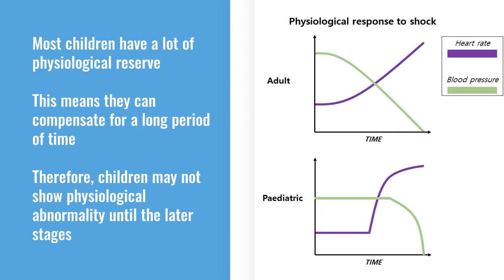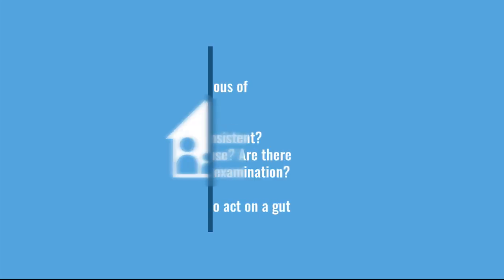Children compensate really well for a long time and then suddenly deteriorate — you don't get the slow deterioration you see with elderly patients. Some of the early features might not present as obviously early as you'd expect. For example, if they're tachycardic, that's probably a sign of shock. Whereas adults might drop their blood pressure, kids won't — they'll maintain it until the very end.